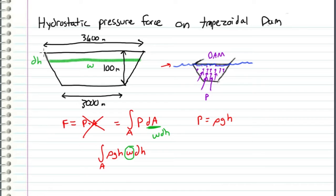At the top, the width is 3600, and at the bottom it is 3000. This width changes linearly because we're changing at a constant rate.